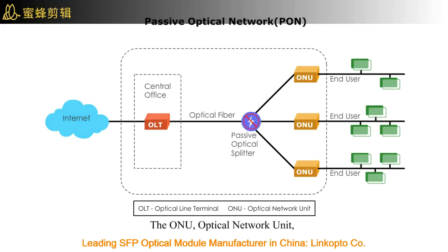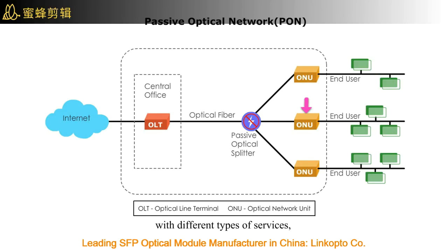The ONU, Optical Network Unit, terminates the PON and delivers to end-users different types of services, such as internet, telephone, or cable TV.